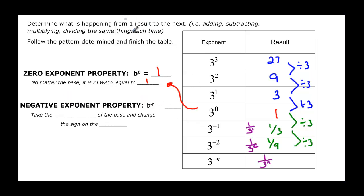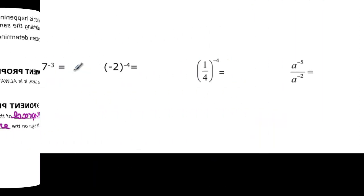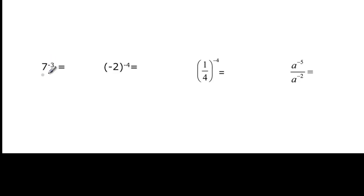Negative exponents: no matter what the base, b to the negative n is going to be 1 over b to the positive n. My base was b and it became 1 over b — we take the reciprocal. And then once I took the reciprocal, I started out with a negative exponent and now I have a positive exponent. So I have to change the sign on the exponent. For example, 7 to the negative 3: the reciprocal of 7 is 1 over 7, and we change from negative 3 to positive 3. So 7 to the negative third is the same thing as 1 over 7 to the positive 3.